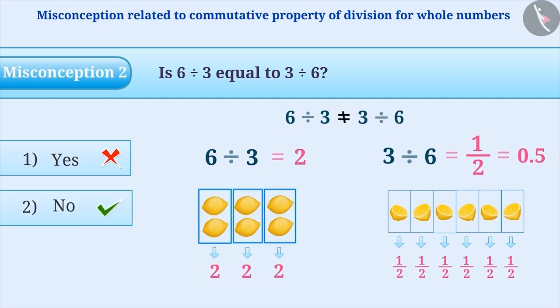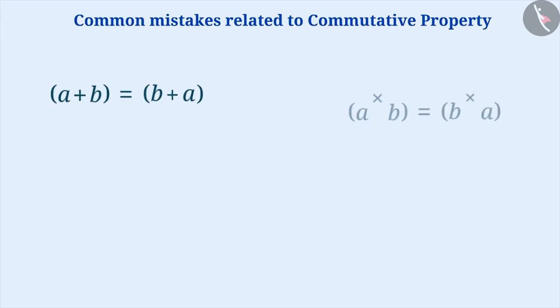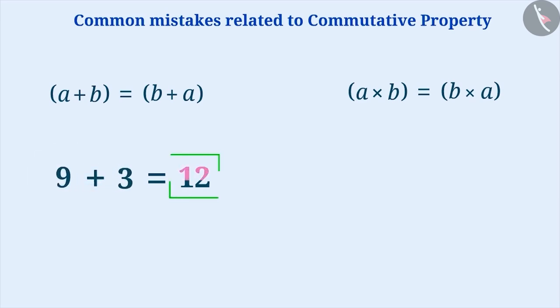Now, let's understand some of the common mistakes related to commutative property. Often students know the commutative property. However, they don't use it for simplifying the addition or multiplication. For example, the addition of 3 and 9 is done in the given order, whereas it is difficult to add a larger number to a smaller number. However, by changing the order, the result of addition can be obtained very easily.